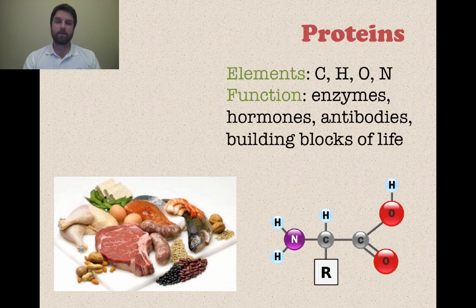So what's next? We have proteins. So these are carbon, hydrogen, and oxygen. But we add a little bit of nitrogen now into proteins. And the function or the things that proteins are used in are enzymes, hormones, antibodies, and they're basic building blocks of life. So on the bottom right there, you can kind of see a basic structure.